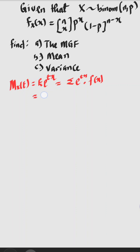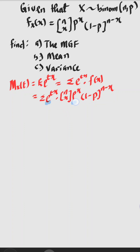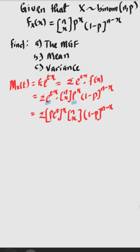Now using this rule, we have the summation of e to the power of tx times the PDF of the binomial distribution, which is n combination x, p to the power of x, 1 minus p to the power of n minus x. To simplify further, e to the power of x and p to the power of x have the same power, so these two can be combined as summation of (p·e^t)^x times n combination x times (1 minus p)^(n minus x).